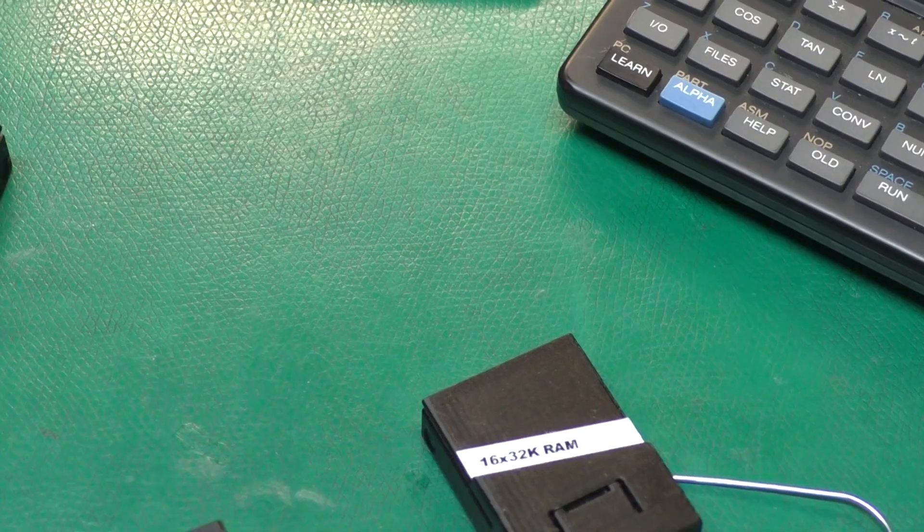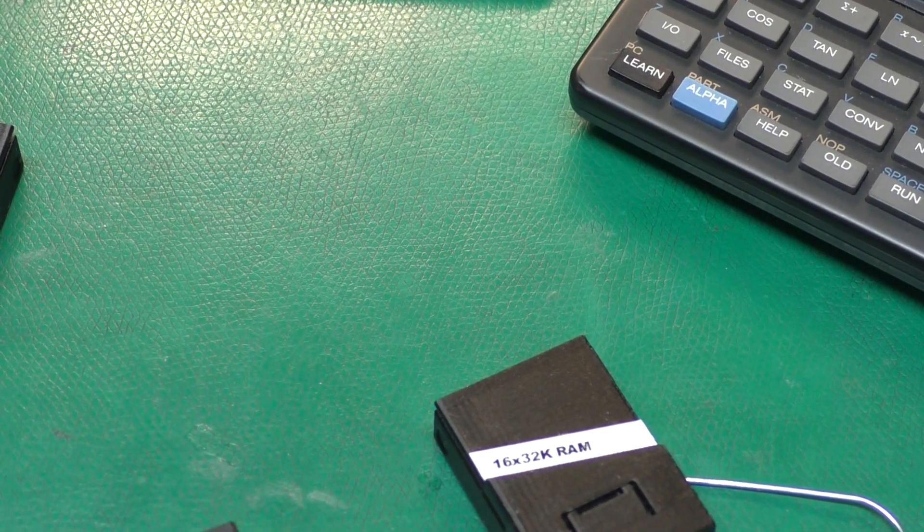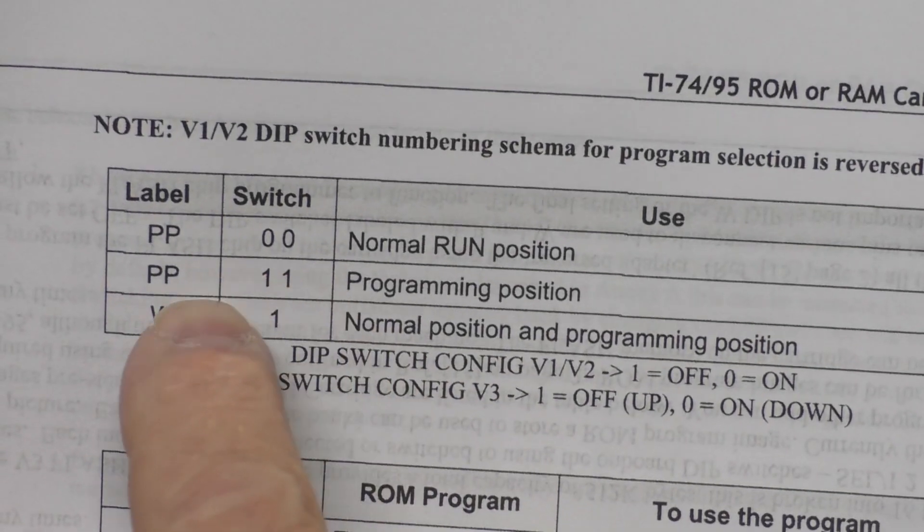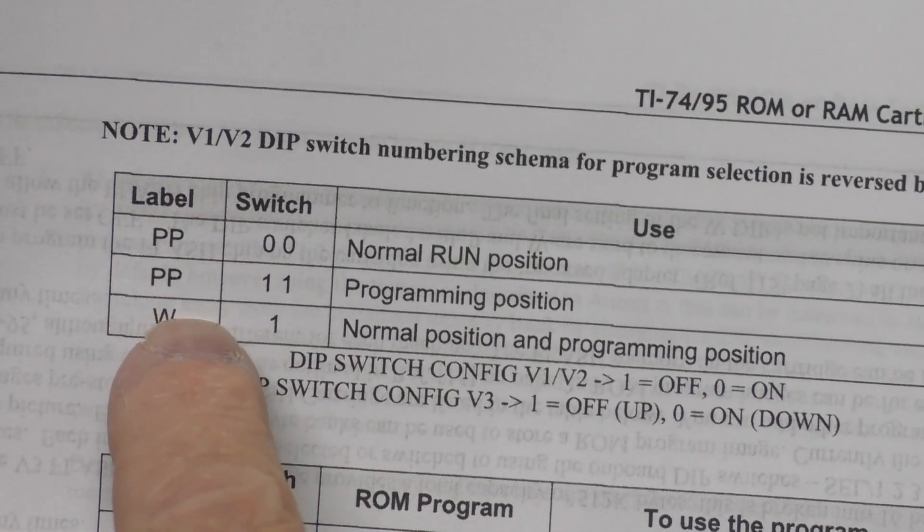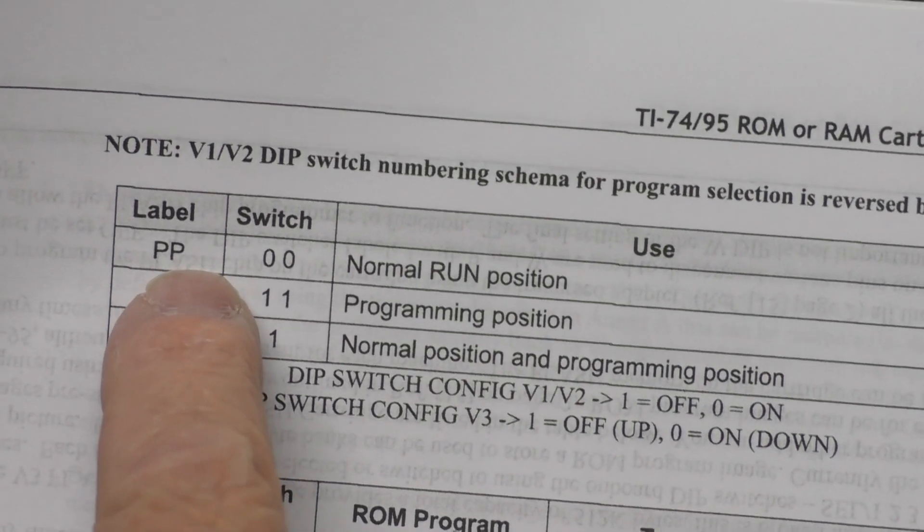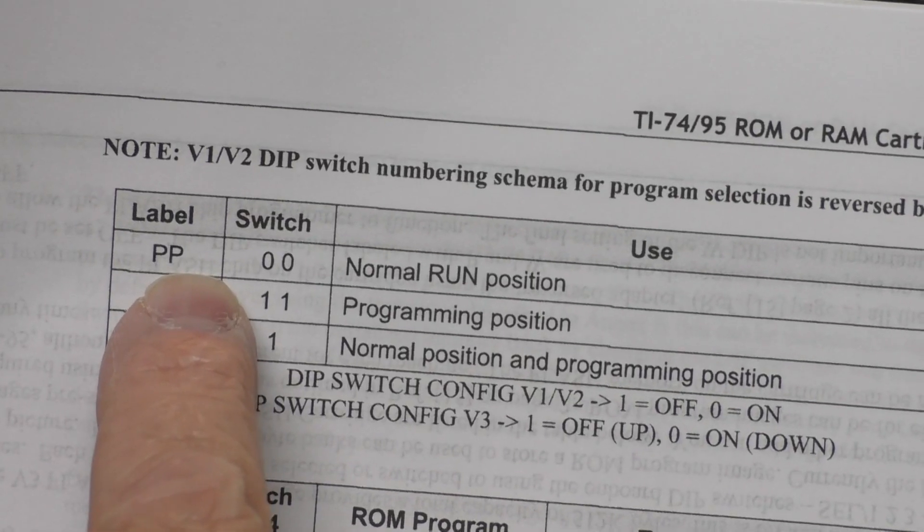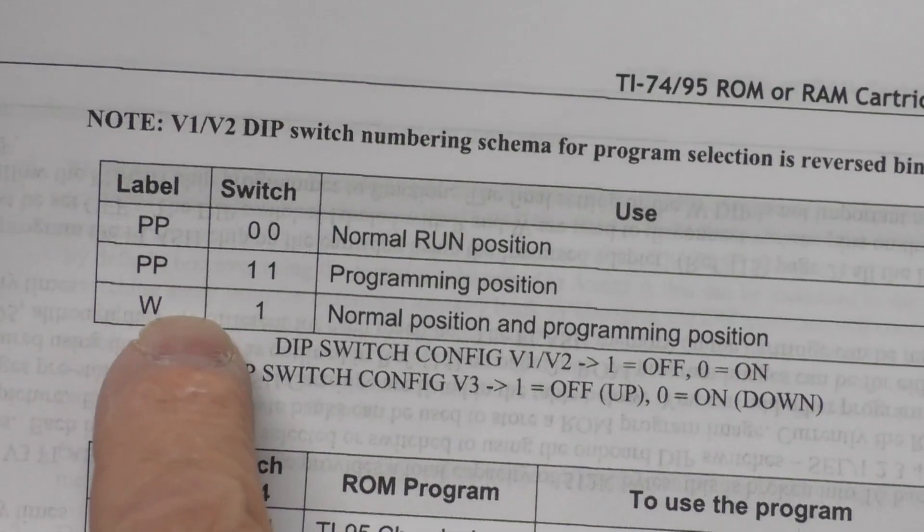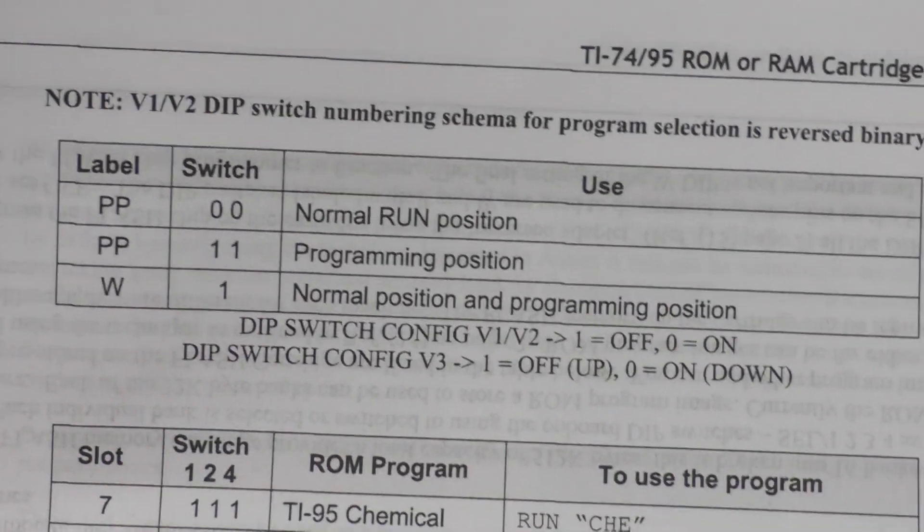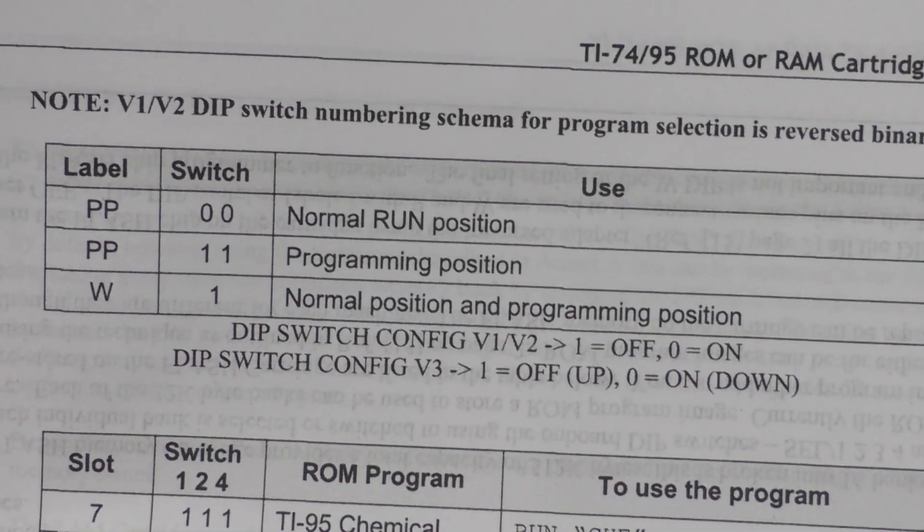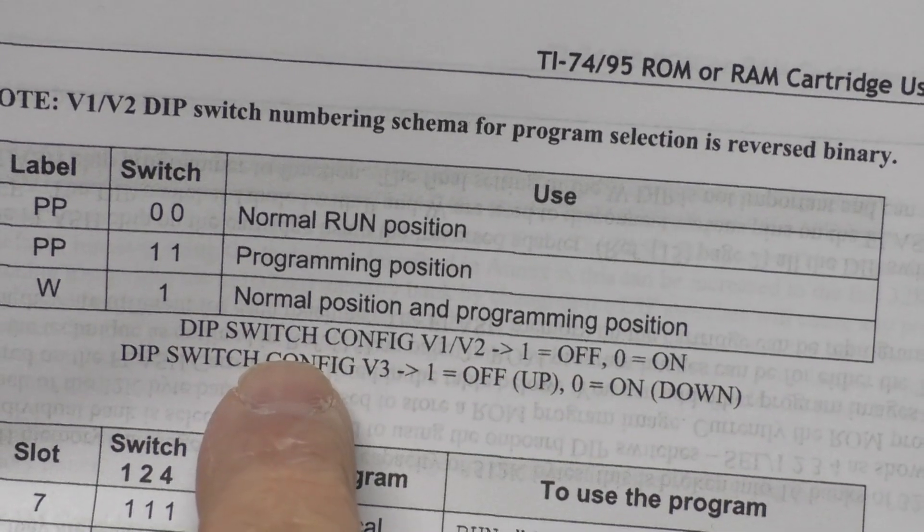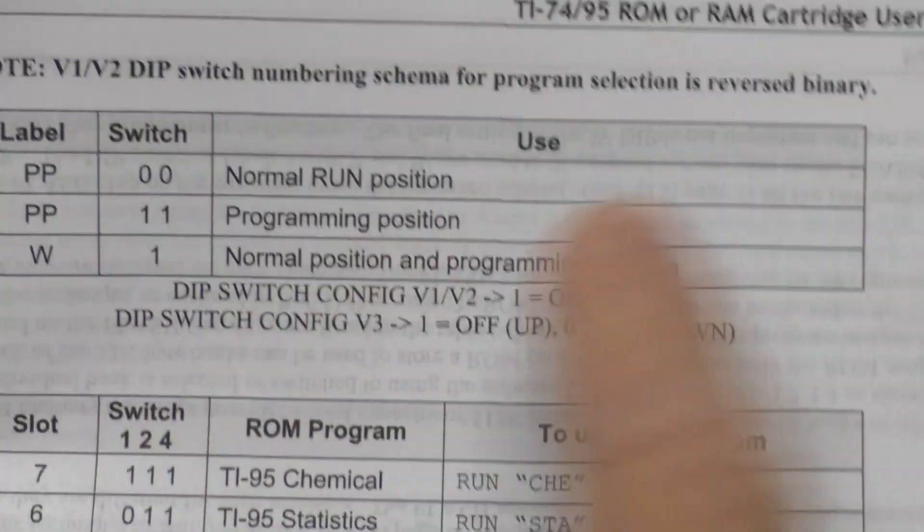The manual describes which switch to flip for what. There is a table that shows what the letter-labeled switches are for. For the flash, you have a couple switches called PP that you flip one way if you're going to program the flash with an external programmer, flip the other way for running. On the RAM cartridge there is a W which is a write protect. If you flip that down to the zero position, you can't write to the RAM—it will act more like a ROM in that case.